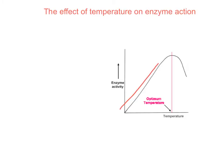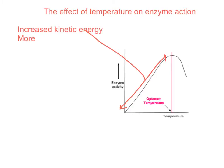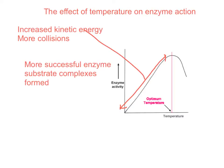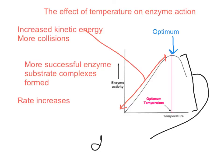We need to explain the effect of temperature on enzyme action. Before we reach the optimum, the rate of reaction is increasing because there is an increase in kinetic energy — the enzyme and substrates have more energy and move around a lot more. The more kinetic energy there is, the more collisions there will be between the enzyme and substrate, more successful collisions. The more successful collisions, the more enzyme substrate complexes will be formed, and the rate will increase up to the optimum. Following this, the enzyme gets denatured.